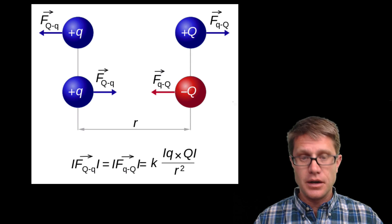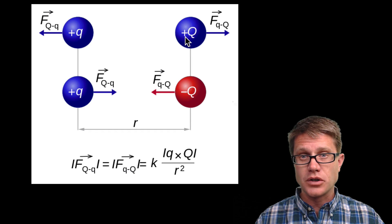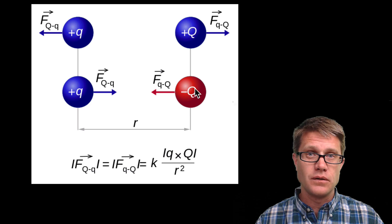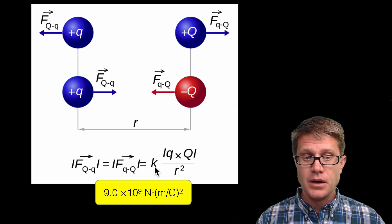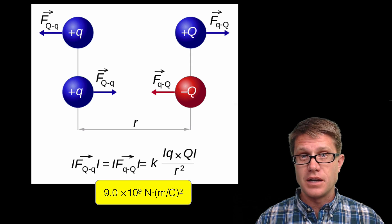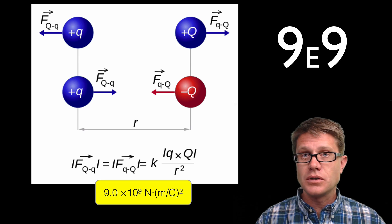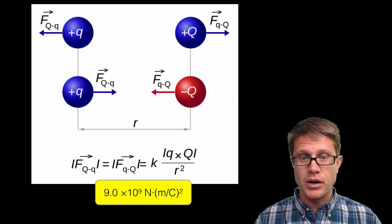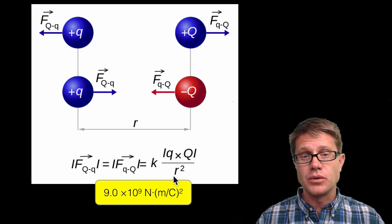Here is Coulomb's law again. If we have two charges equal in nature that is going to be a repulsive force, but the force is going to be the same on both. If they are opposite it is going to be an attractive force — again the same on both charges. Coulomb's constant K is 9.0 times 10 to the 9th, easy to remember as 9e9 newton·meters squared per coulomb squared. Then we multiply our two charges q times q and divide by the square of the distance between them.